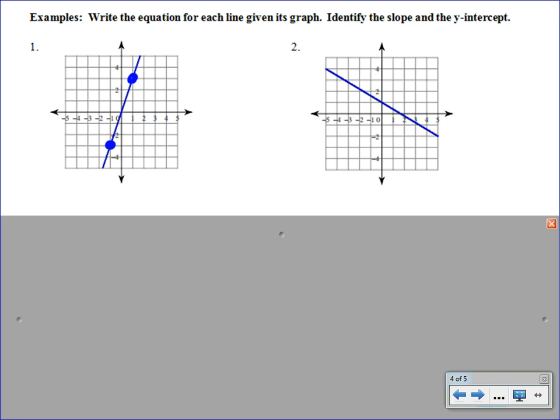So we're always going to read the graph from left to right. So we're going to start at that lower point, and we're going to count how many squares we go up. So it looks like our rise is a positive 6. And then our run, we're going to the right 2, so that is a positive 2. So our slope is positive 3 when we reduce.